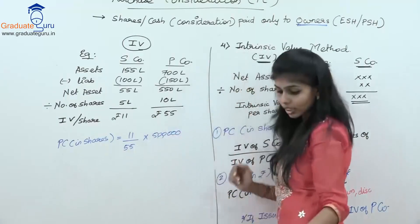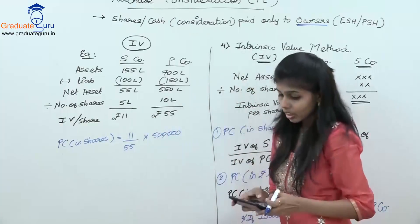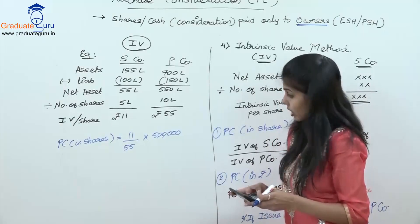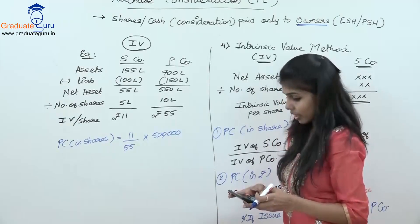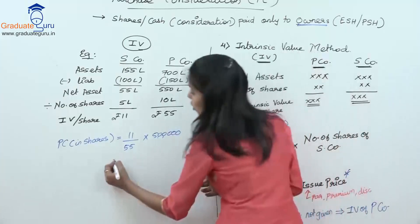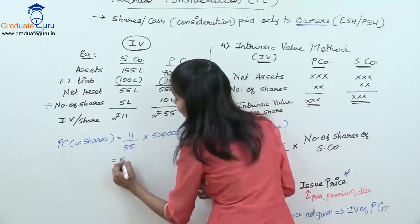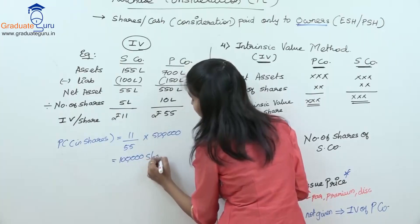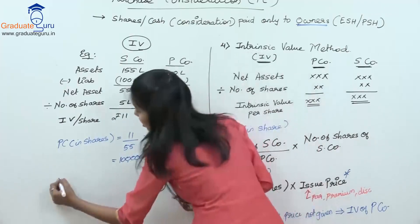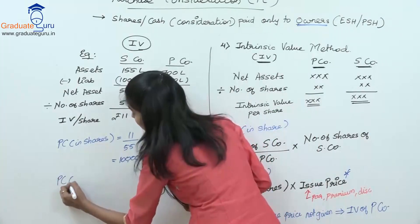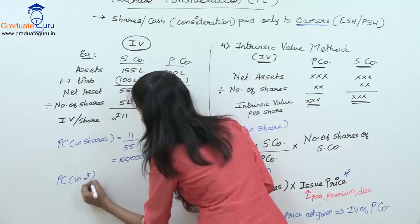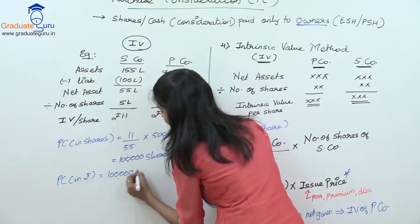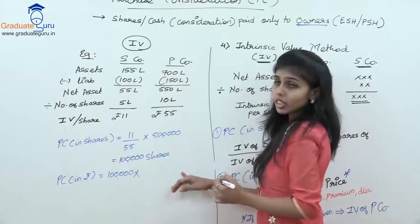So kitna aata hai? 5 lakhs into 11 divide by 55 — that gives you 1 lakh shares. Or PC in rupees would be equal to this PC in shares into issue price.